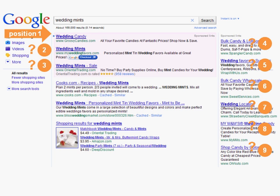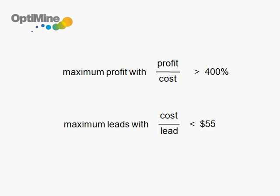OptiMine Paid Search Bid Management is a software-as-a-service application that automatically sets the best bids for each of your keyword ads based on your business goal. For example, if you are a retailer, your goal might be to maximize profit with profit over cost above 400%. If you're a service provider, your goal might be sales leads at a cost of less than $55 per lead.